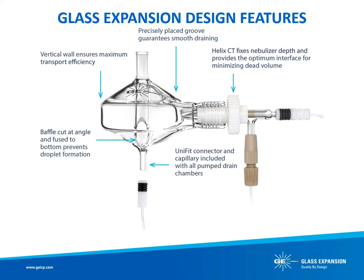Glass Expansion revolutionized spray chamber design for the ICP-OES and ICP-MS analyst by introducing cyclonic spray chambers. Prior to the Glass Expansion Tracy cyclonic spray chamber, Scott-style spray chambers were the standard option provided with your ICP. The design of Glass Expansion cyclonic spray chambers helps the ICP analyst achieve sensitivity gains, reduce washout times, and reduce matrix effects not possible with other designs. An indented groove is built into the top of the spray chamber and serves as a barrier preventing solution from being swept into the torch. The position and depth of this groove are critical. Note that the walls of the spray chamber have a vertical region, which is important for proper aerosol generation and affects transport efficiency to the torch.